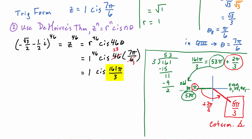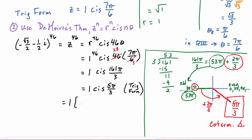Coming back to our equation, this equals one cis five pi over three. That is the trig form. To put the final answer in rectangular form, this becomes one times the cosine of five pi over three, plus i times the sine of five pi over three.